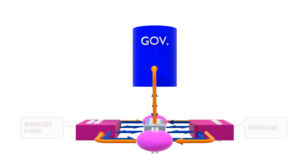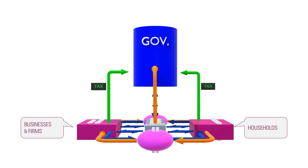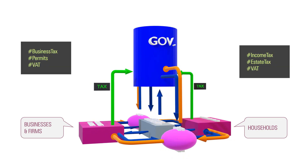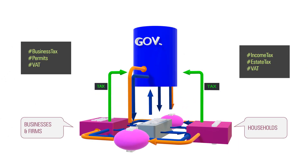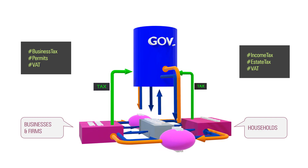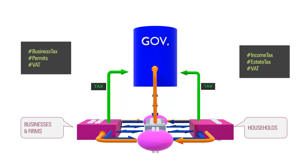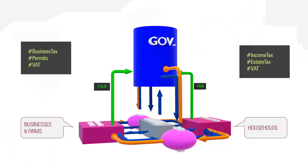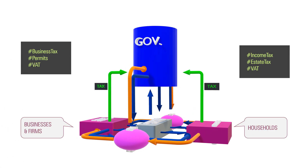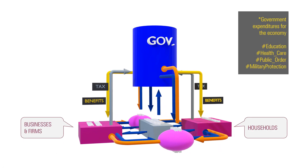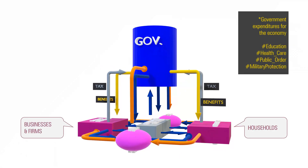The government also has a direct relationship with households and businesses and firms. Most obviously, it taxes both households and businesses on any income, and business income can also be subject to permits and fees.